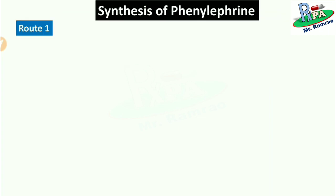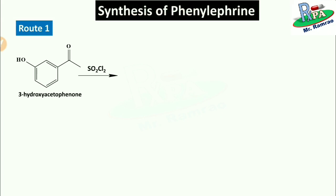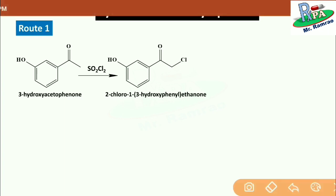Now we will discuss the actual synthesis of phenylephrine. Phenylephrine can be synthesized by various routes; here is the simplest one. Start with the starting material 3-hydroxyacetophenone — numbering the ring 1, 2, 3 shows the hydroxyl group at the third position attached to the acetophenone. React this 3-hydroxyacetophenone with sulfuryl chloride, SO₂Cl₂. This carries out chlorination at the alpha carbon — the carbon adjacent to the carbonyl group — in a selective alpha chlorination reaction, forming the product 2-chloro-1-(3-hydroxyphenyl)ethanone.